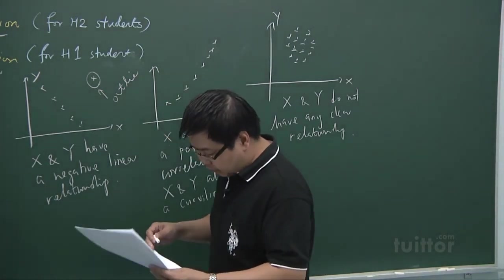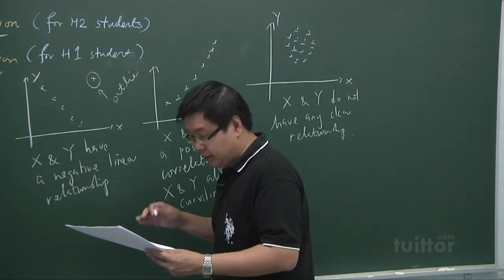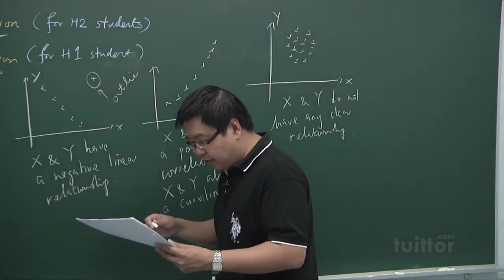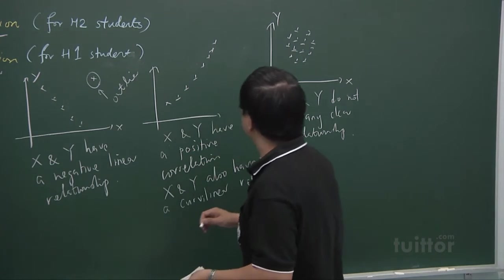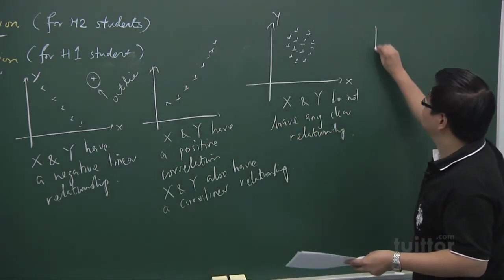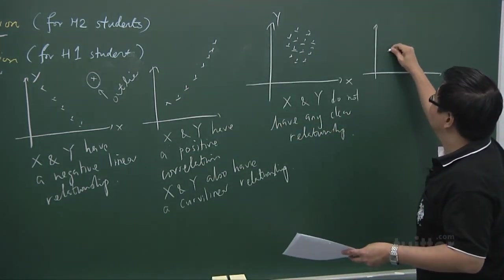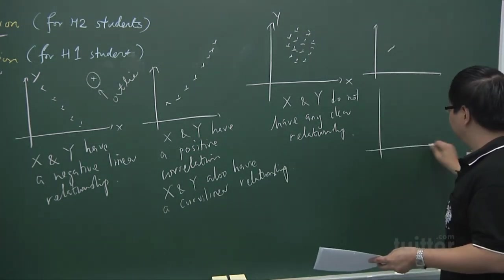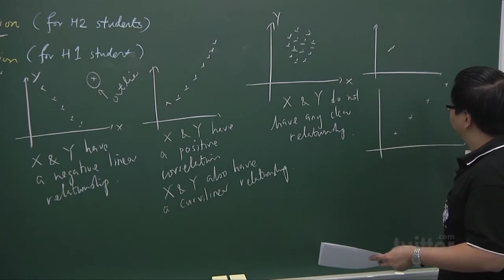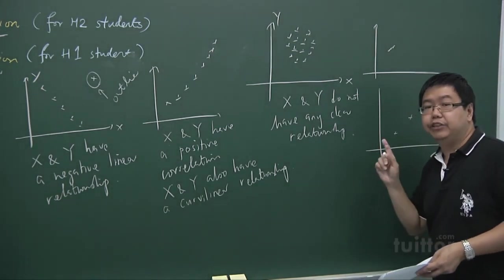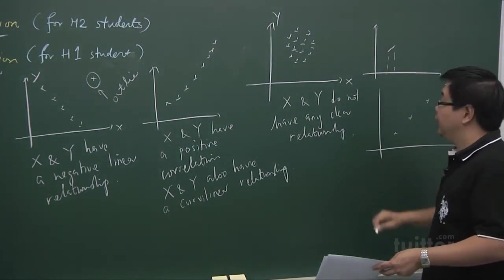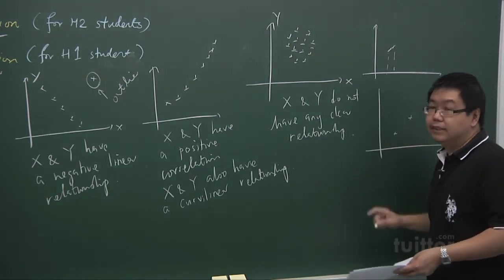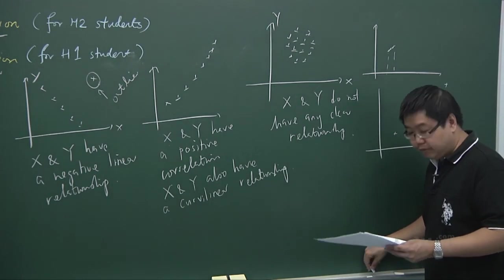In a sense, interpretation of the strength solely based on the scatter diagram is subjective and it can even be deceiving when different scales for the axes are used. For example, points like this, they are very closely together, can actually be converted to this manner by just a change of the scale. So you have to be able to see by yourself whether the scale is a suitable one to represent the set of data.